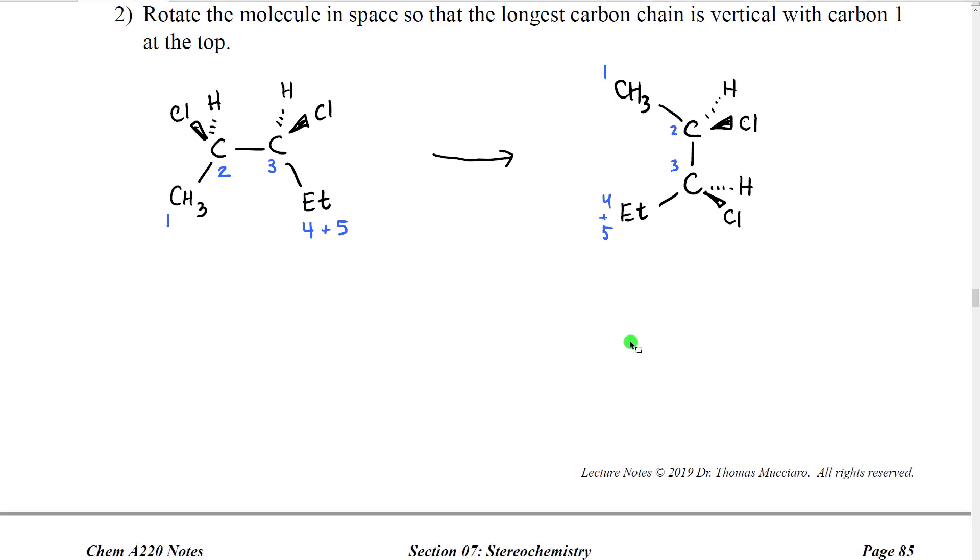Next we're going to take that molecule and we are going to turn it in space so that carbon number one, according to the naming rules for numbering carbons, is at the top of the chain and the rest of the chain is vertical on the paper. So it looks something like this. So the chain at this point is still flat in the plane and all of the groups that are not part of the parent chain are on wedges or dashes perpendicular to that chain.